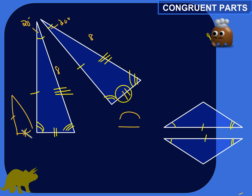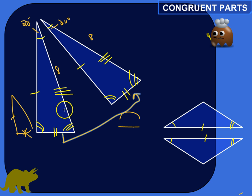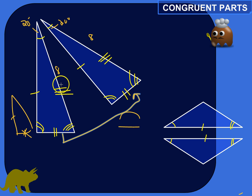I'm also going to put two slashes over here on this corresponding side, which indicates that the measurement of this side is the same as the measurement of this side — they're congruent sides. So this two slashes matches up with this two slashes. And then this third side has a different length from the other two sides of this triangle, so I'm going to name it three slashes. To indicate that this side is congruent with this side, I'm also going to name this three slashes.